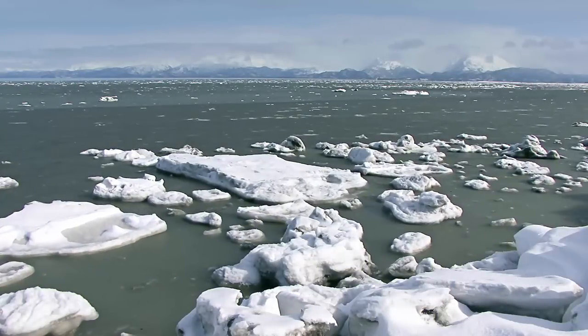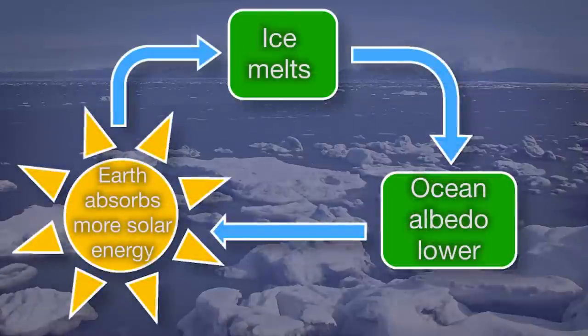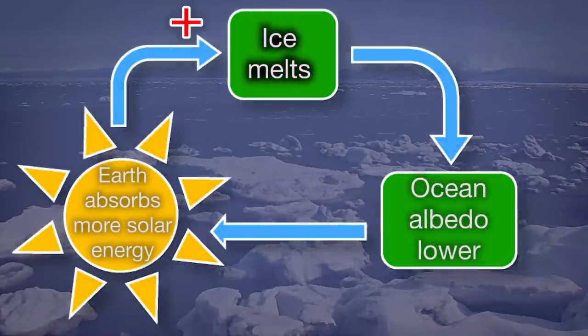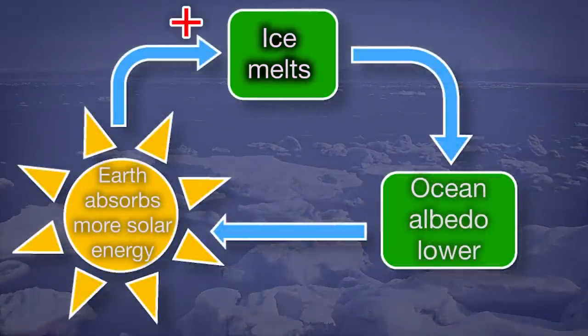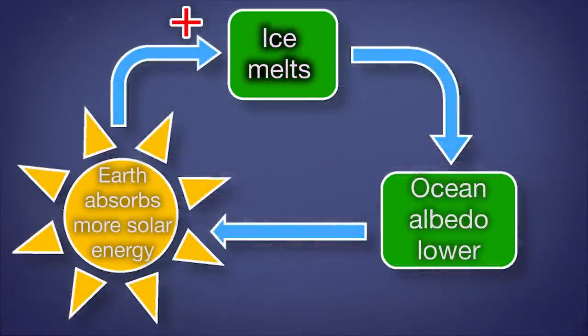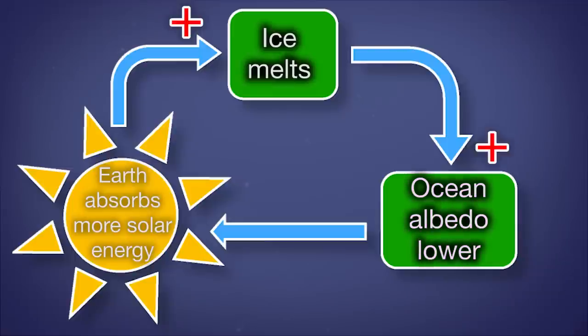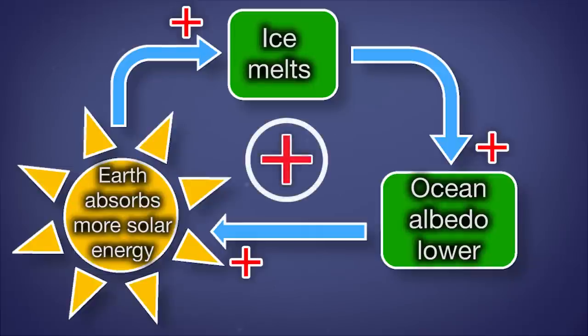Let's consider a polar feedback loop. Warmer global temperatures melt polar sea ice. This melted ice results in an increase in the area of sea that is liquid, which is darker and has a lower albedo than sea ice. Remember, lower albedo means lower reflectivity, meaning it absorbs more energy from the sun. Thus this change results in warming the ocean and the ocean atmosphere, and that cycle continues.